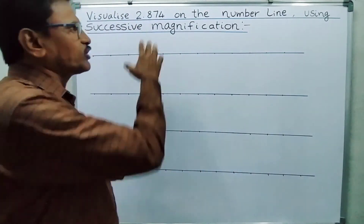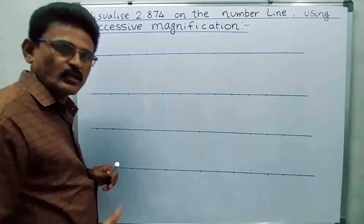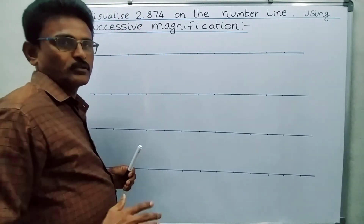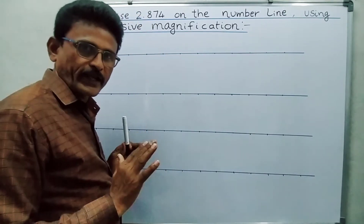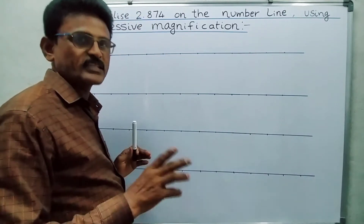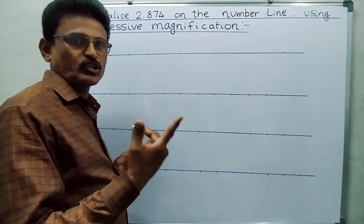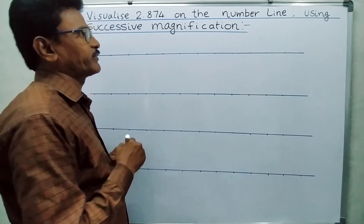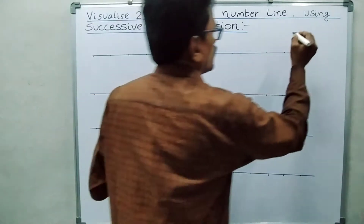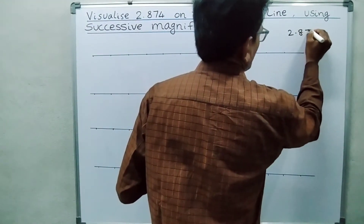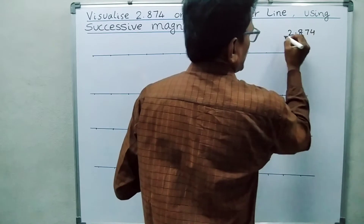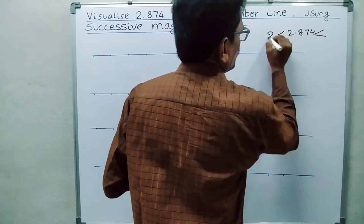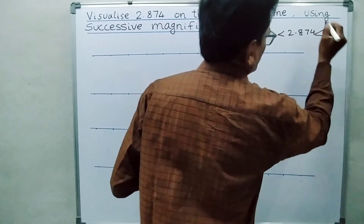So, how do I represent this on the number line? First of all, we have to think: 2.874 is greater than 2 but less than 3, meaning 2.874 lies between 2 and 3.